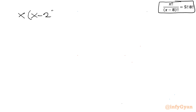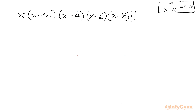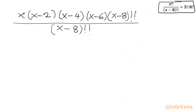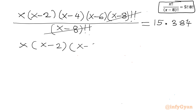Let us apply the recursive formula to the left-hand side. So the numerator becomes x times x minus 2 times x minus 4 times x minus 6 times x minus 8 double factorial, and the denominator is x minus 8 double factorial. The right-hand side is 15 times 384. We can cancel the two double factorials, leaving x times x minus 2 times x minus 4 times x minus 6, and this product equals 5760.